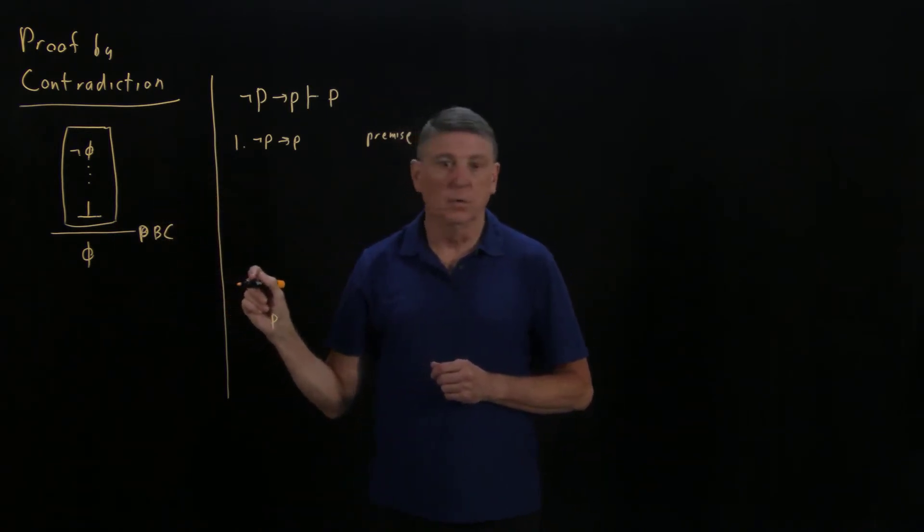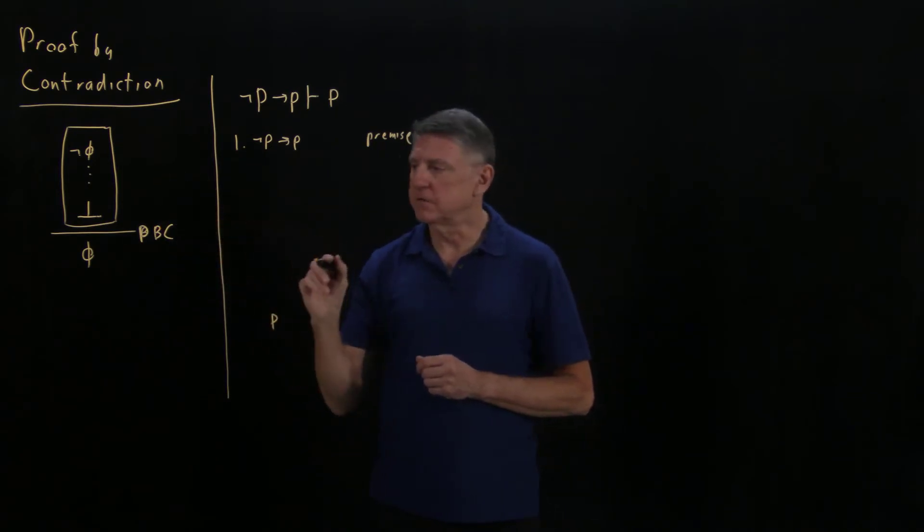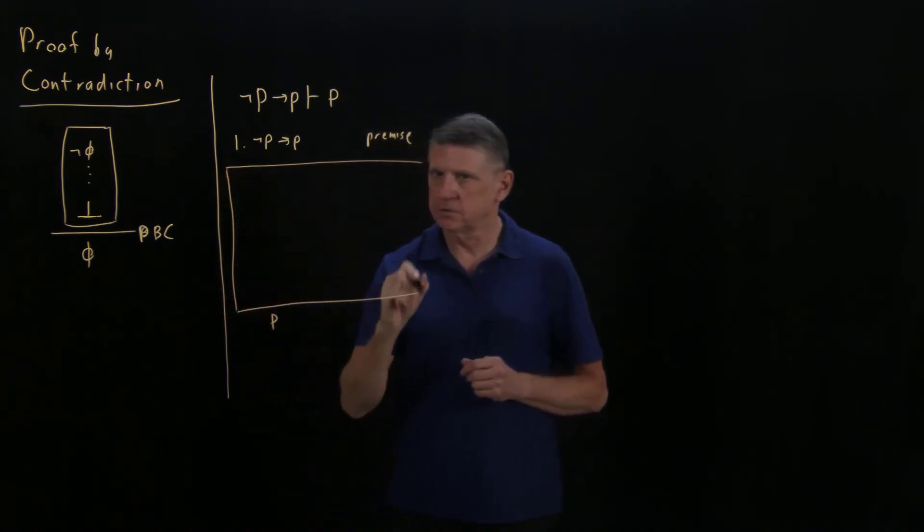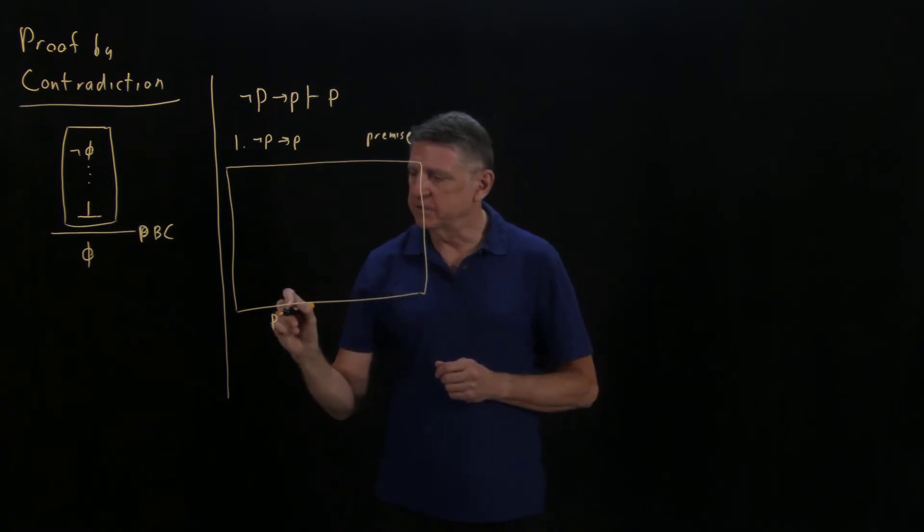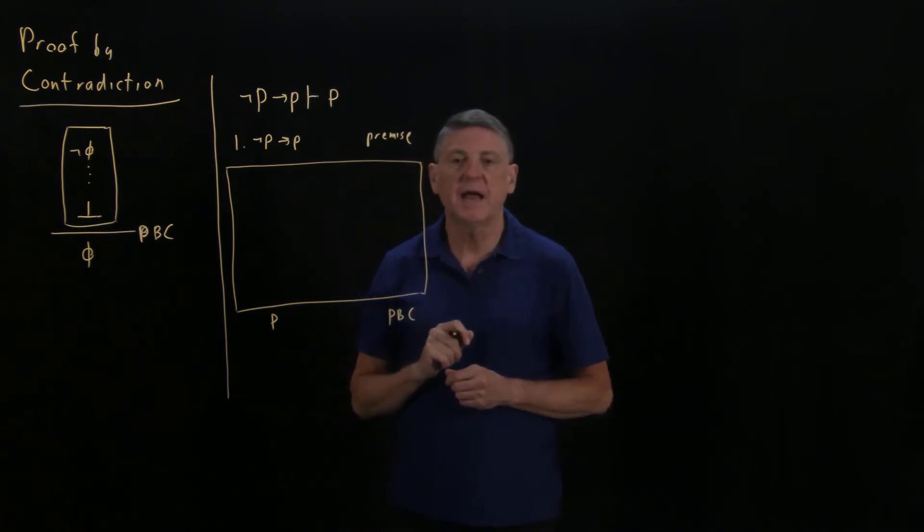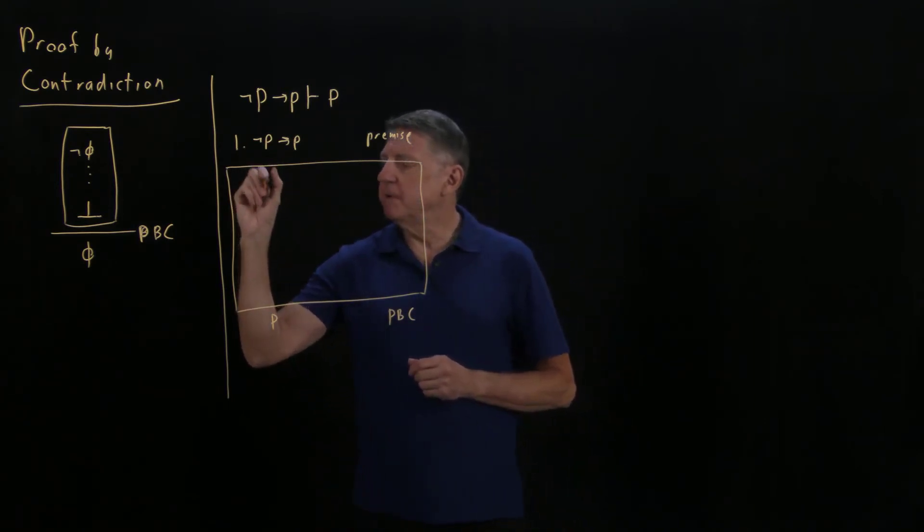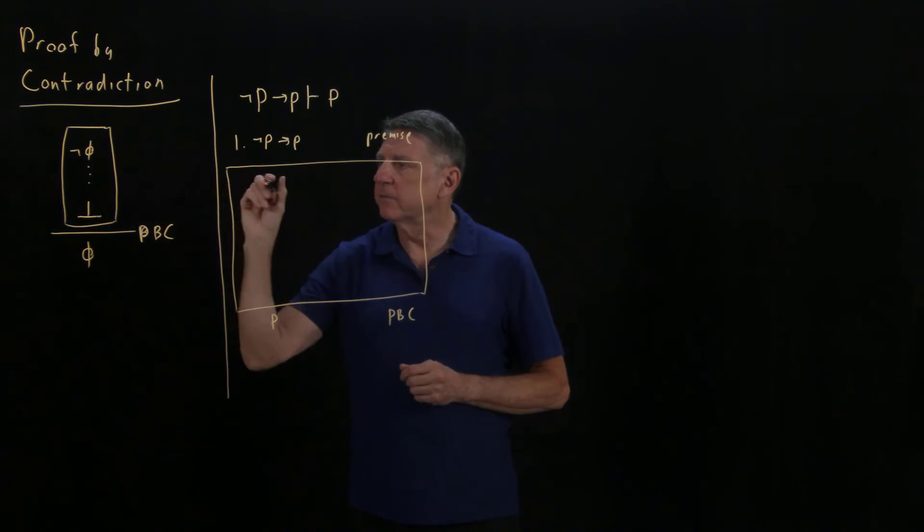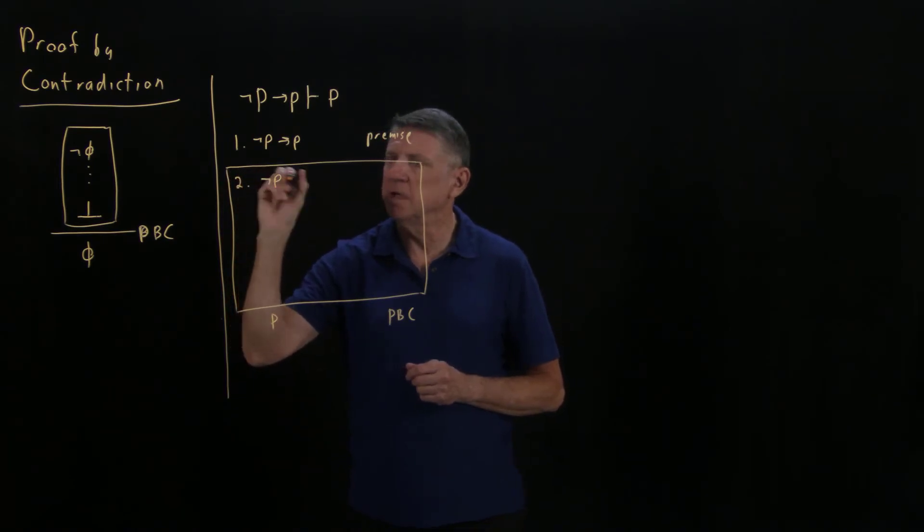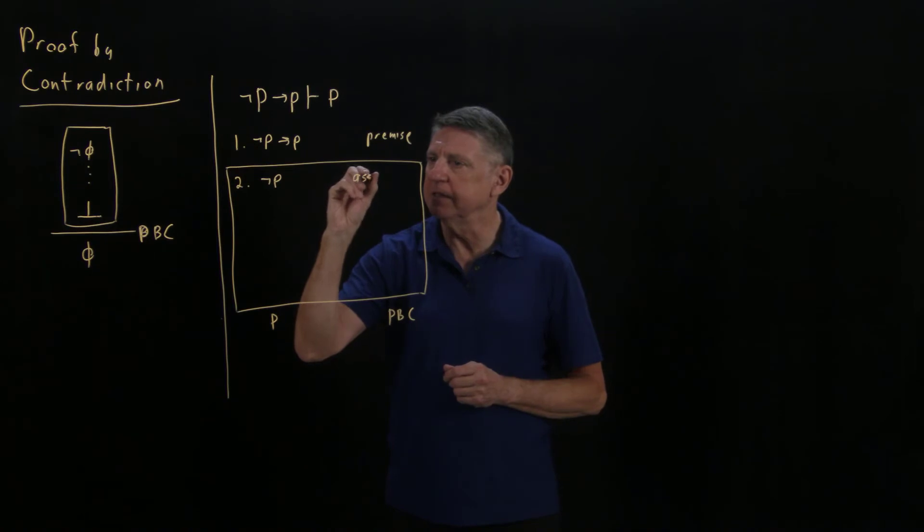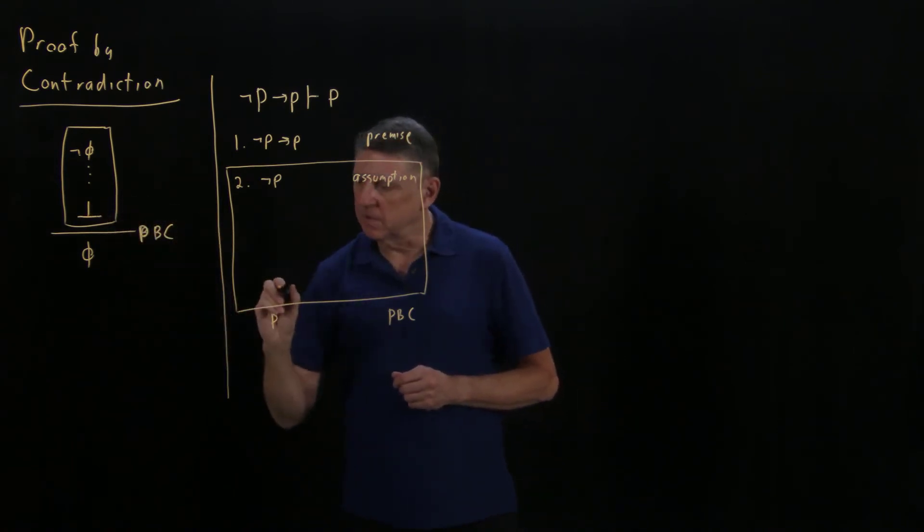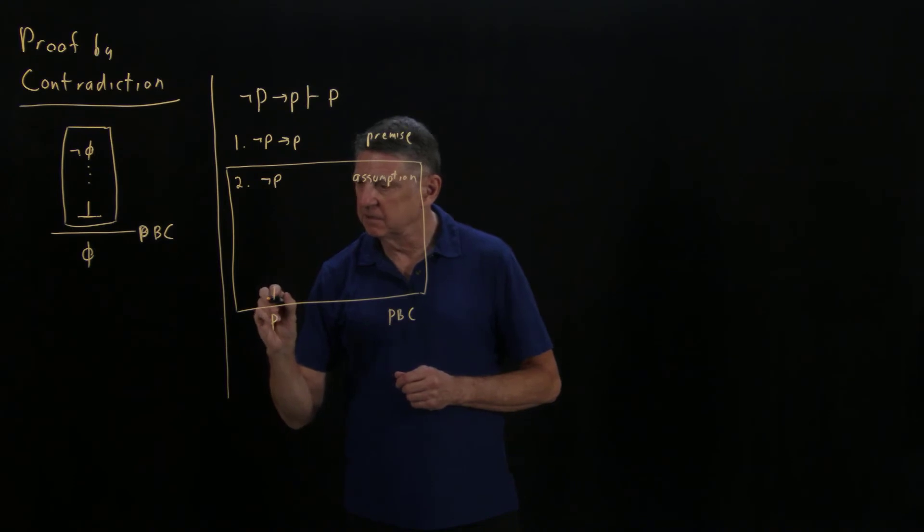The only rule that we know of that we can use so far would be this proof by contradiction. In order to set that up, we create an assumption box, which is our first step. The second step is to write down the reason for the assumption box, and we're going to use proof by contradiction as our inference method. Our third step is to fill in the first line of the box, which is the negation of the formula that we're aiming at. That would be line 2, in this case the negation of P, and the reason that appears in our proof is that it is an assumption.